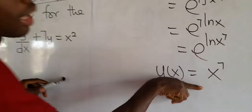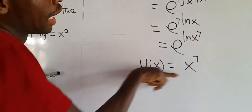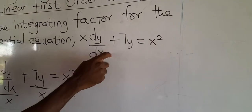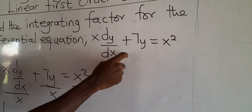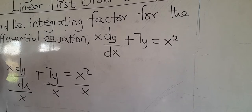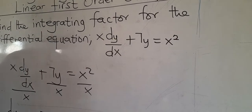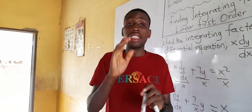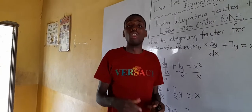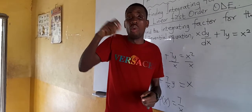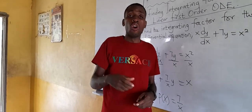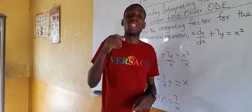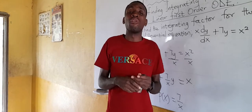So x^7 becomes the integrating factor for this linear first order ordinary differential equation. I hope you get that. The integrating factor is very, very important. I'll solve one more question before we find full solutions.